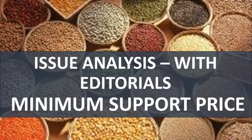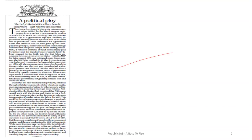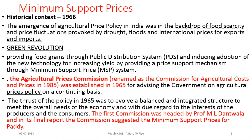In this video we will discuss Minimum Support Price. This topic came up in an article in The Hindu and is important for UPSC Prelims as well as Mains. The historical context: MSP was first announced in 1966. In the 1960s there was a food scarcity due to various reasons — monsoon-dependent agriculture, droughts, floods, and international prices determined by exports and imports.